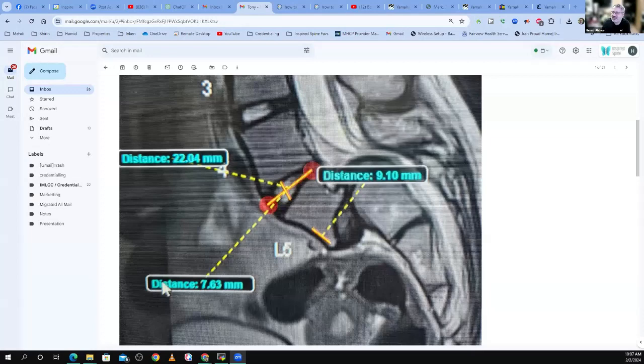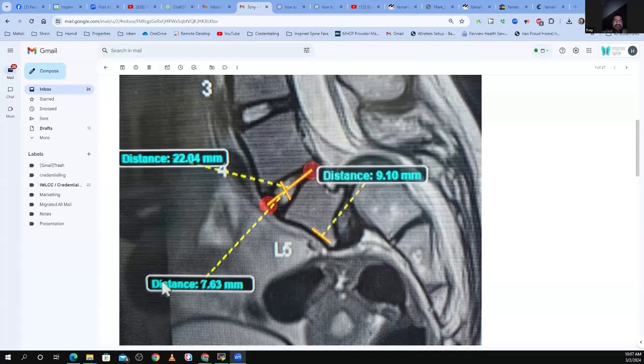She had bilateral radiculopathy. I think it was L5. That makes sense. But back pain was worse than the leg pain.